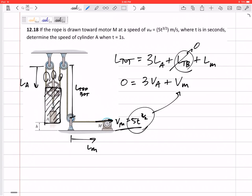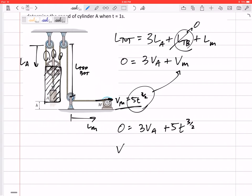And so here's my V_M right there - it's positive, it's going out positive outward - and so 0 equals 3V_A plus 5t to the 3/2. So the velocity of A would be something like negative 5/3 times t to the 3/2.